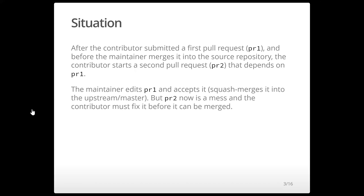What do I mean by interdependent pull requests? Imagine this situation. Let's say that I'm a contributor and I create pull request number one, and I start working with it. I submit that pull request to the source repository, which I first forked. The pull request is still sitting there, but then I'm in a rush, so I start the second pull request. Because it depends on pull request number one, I branch off PR2 from the tip of PR1. So basically I'm expecting as a contributor that PR1 is going to be accepted as is.